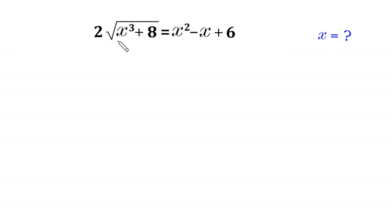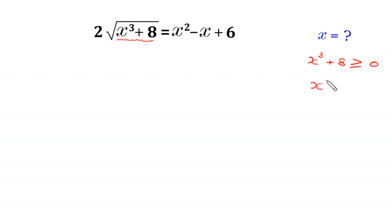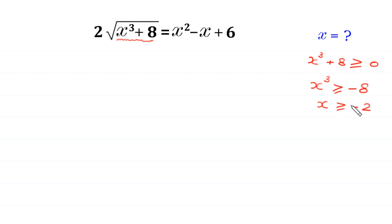Since the expression x cubed plus 8 is under a square root, this expression must be greater than or equal to 0. Moving the plus 8 to the right side, x cubed must be greater than or equal to negative 8. Taking the cube root of both sides, x must be greater than or equal to negative 2. This is the domain for this equation.